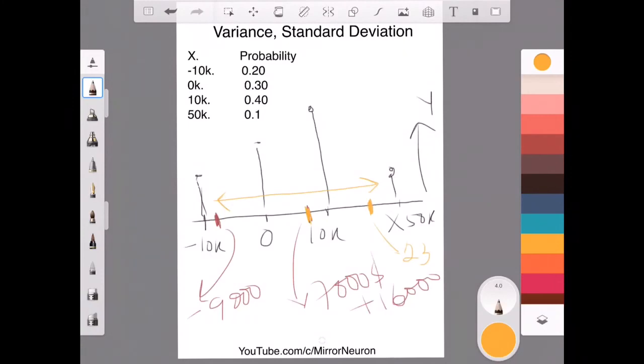So, this is the concept of variance and standard deviation in terms of discrete random variable and the same concept can be extended in the case of continuous random variable. So, that we will see in our future video.